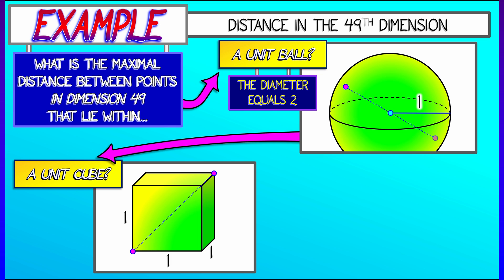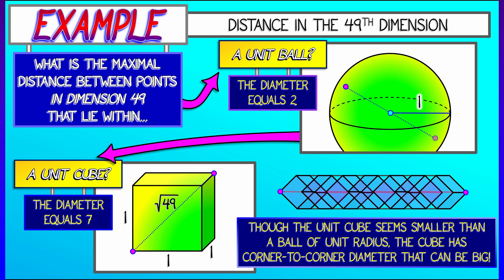Well, applying the distance formula that we have in a 49-dimensional space, all of the differences between the various coordinates is equal to 1. So we take the square root of 1 squared plus 1 squared plus 1 squared all the way up. We get the square root of 49. That is 7. So that means you've got this little unit cube. All the side lengths are 1. But if you put your fingers on opposite corners, then the tips of your fingers are 7 units apart.